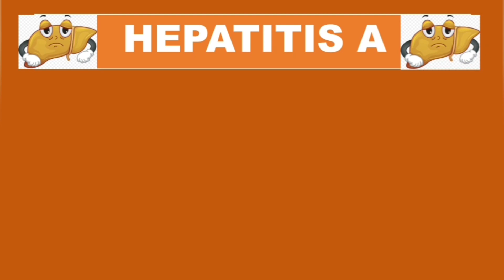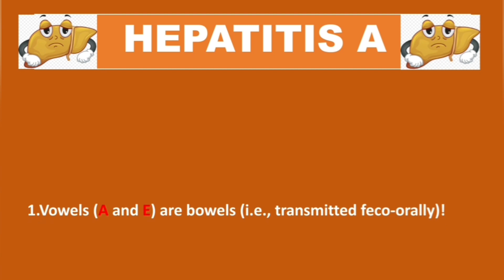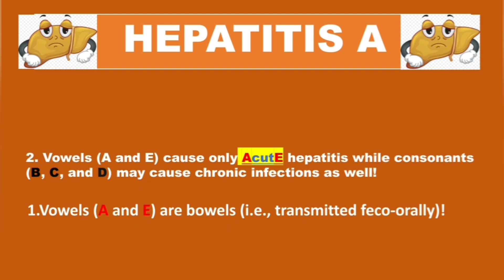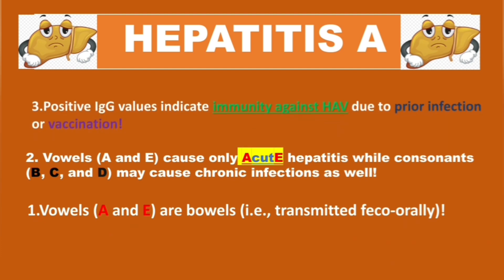Three take-home points: Rule one — the vowels, Hepatitis A and E, are transmitted fecal-orally. Rule two — the vowels A and E only cause acute hepatitis, while the consonants — Hepatitis B, C, and D — may cause chronic infections as well. Rule three — positive anti-HAV IgG values indicate immunity against HAV due to prior infection or vaccination.